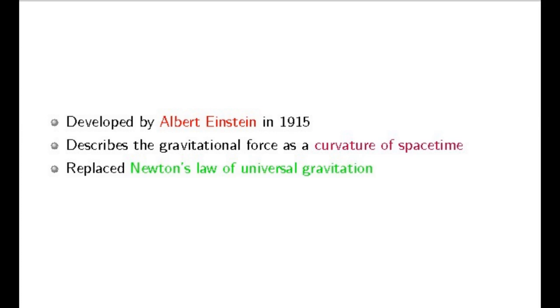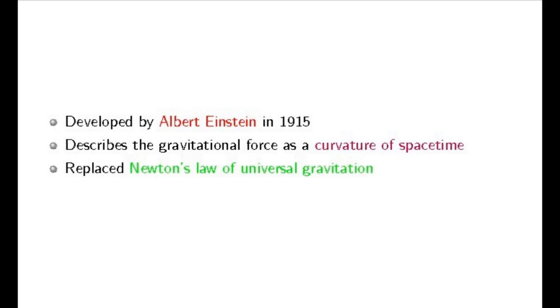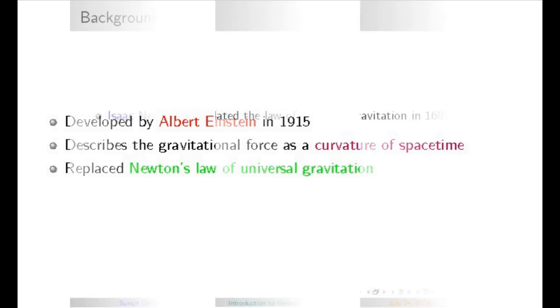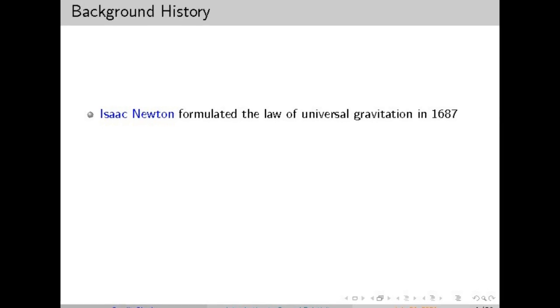Einstein's field equations are the mathematical tools that describe this curvature. These equations essentially say that matter tells space-time how to curve, and curved space-time tells matter how to move — a beautiful interplay between geometry and physics. In 1907, Einstein first introduced the equivalence principle: that free-falling objects experience no gravitational force. By 1911, he predicted that light from distant stars would bend as it passed near a massive object like the sun — a bold prediction that would take years to prove.